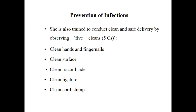The fourth C is clean ligature, which is used for tying the open end of the umbilical cord. The fifth C is clean cord stump — we advise not to put anything over the cord stump. In India, practices like putting cow dung or honey over the cord stump are prevalent, but this is not advisable. As a medical professional, you should not encourage practices that promote infections. These are the five C's and they are important.